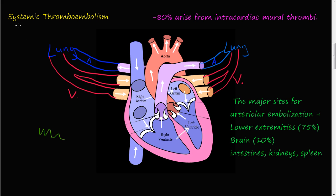Our next topic is systemic thromboembolism, which is an embolism that is in the systemic or the arterial part of your cardiovascular system.